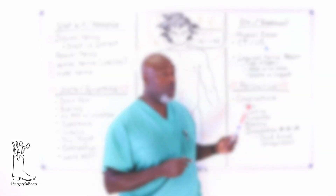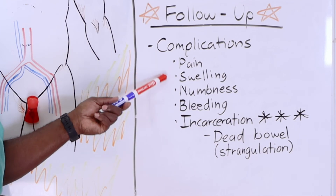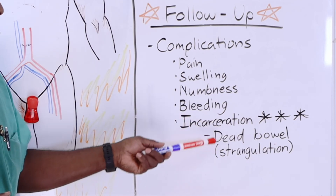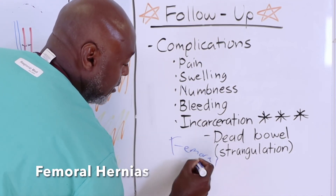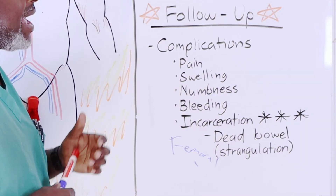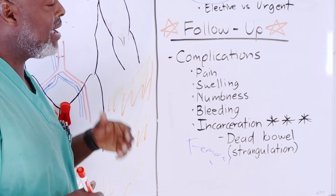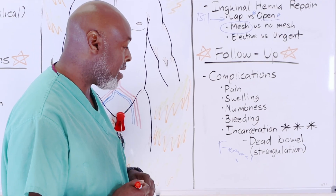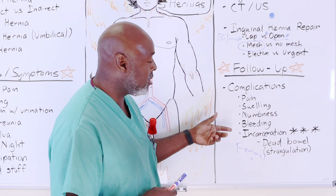As far as follow-up: watch for pain, swelling, numbness, and bleeding — the same complication grouping you see after any surgery. With incarceration of a hernia, which is usually a femoral hernia, we may put a scope in laparoscopically to check for dead bowel. If there's dead bowel, you have to resect it and the patient stays in the hospital two to three days. If not, you can reduce it and do a femoral hernia repair with mesh. All the same pain, swelling, numbness, and bleeding considerations still apply.